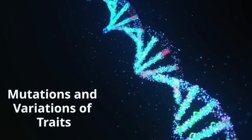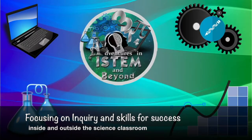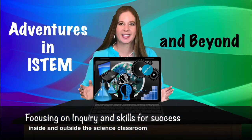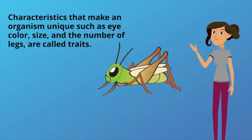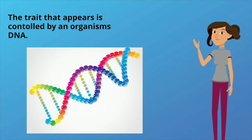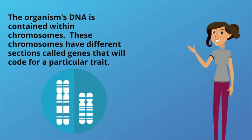Mutations and Variations of Traits. Characteristics that make an organism unique, such as eye color, size, and the number of legs, are called traits. The trait that appears is controlled by an organism's DNA. The organism's DNA is contained within chromosomes, and these chromosomes have different sections called genes that will code for a particular trait.